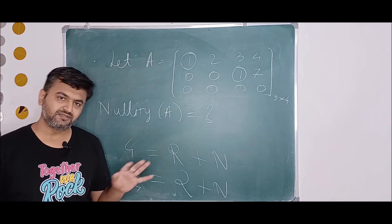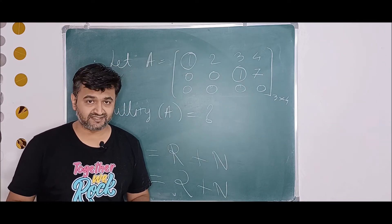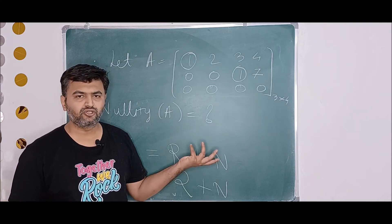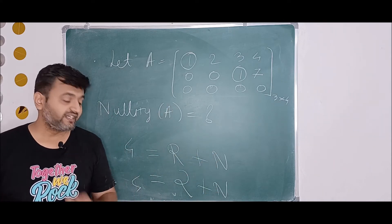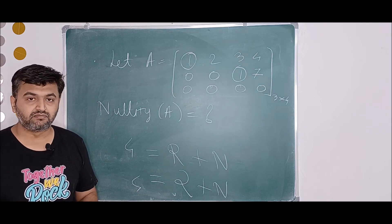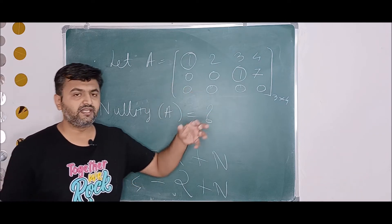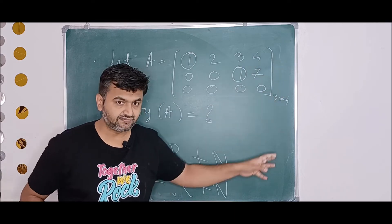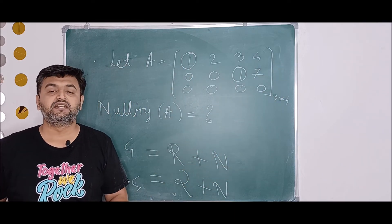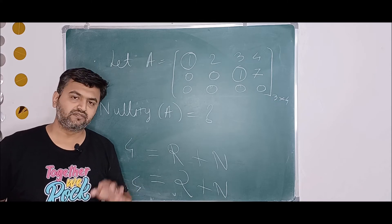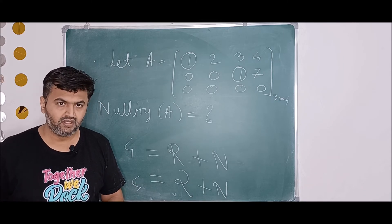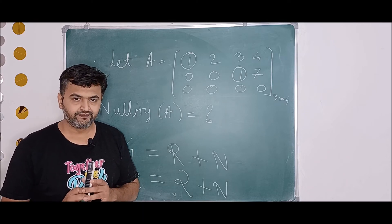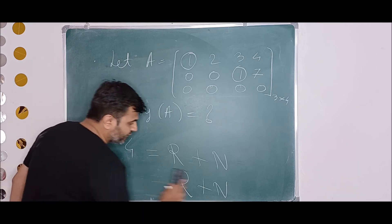Such questions appear in competitive exams and final exams, so knowing the rank nullity theorem saves a lot of time. Otherwise you would set up A x-bar equals zero with x1, x2, x3, x4, multiply it out, and count the vectors — you would get the same answer of nullity 2, but it is much more time consuming.